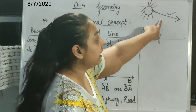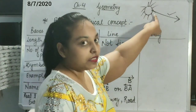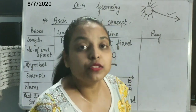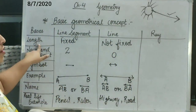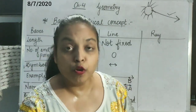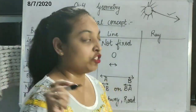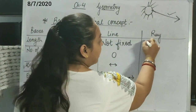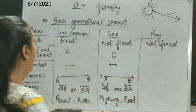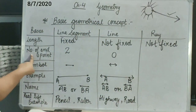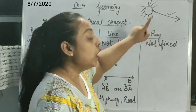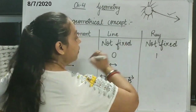Now, what can you observe in it? If it has a starting point but is moving continuously on the other end, what can you say about that? Its length will not be fixed, because it is moving continuously in one direction. So the length of the ray is not fixed. Now, how many end points does it have? As I told you, it has a starting point but no end point. So the number of end points will be 1.